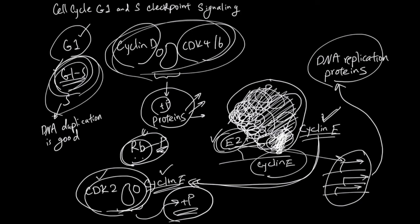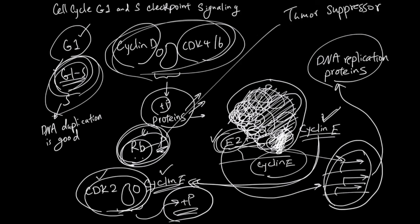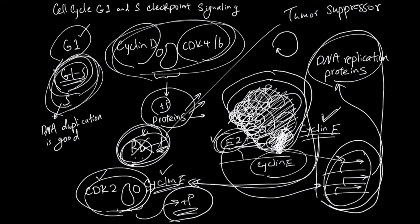In addition, E2F can go activate many other genes needed for DNA replication. The RB gene here is a tumor suppressor. In many cancers, RB genes lose its function. So this blocking of E2F doesn't happen well. And as a result, a lot of DNA replication proteins are made and the cell will go through cell cycle without good check. This uncontrolled cell cycle leads to cancer.